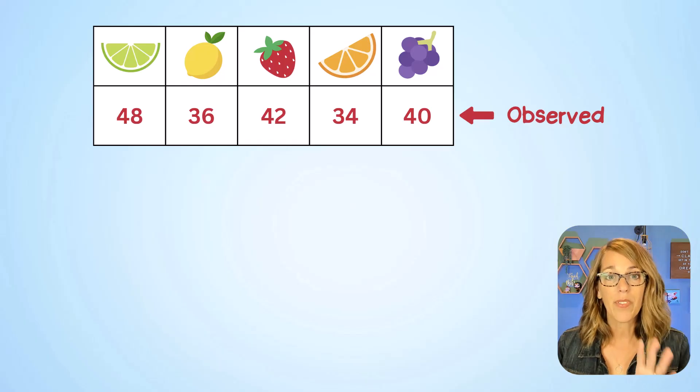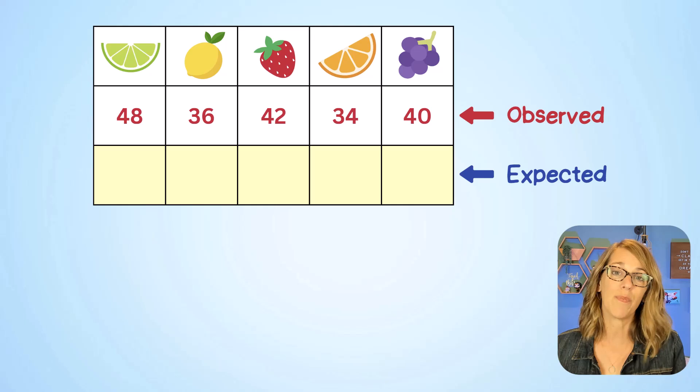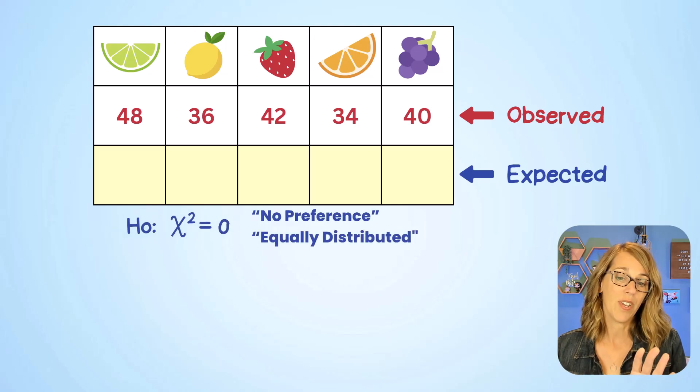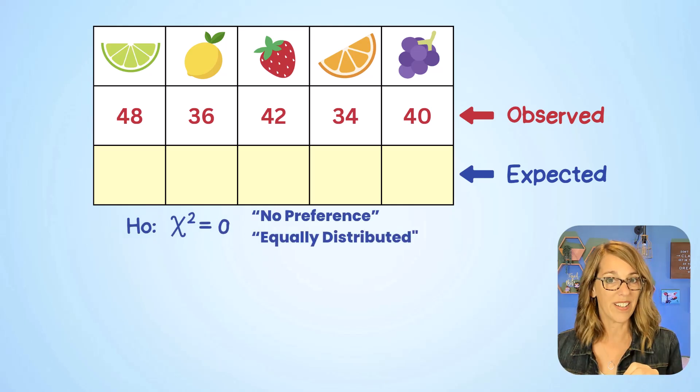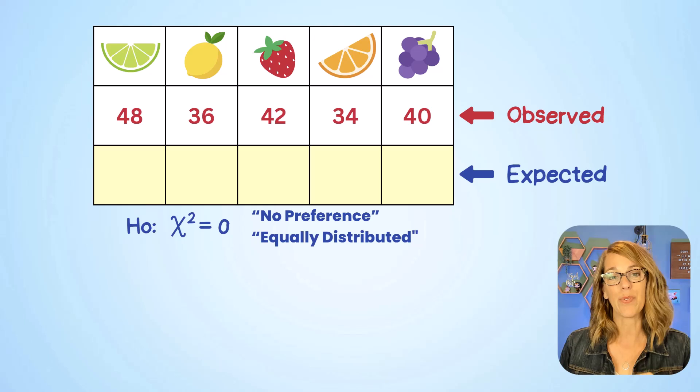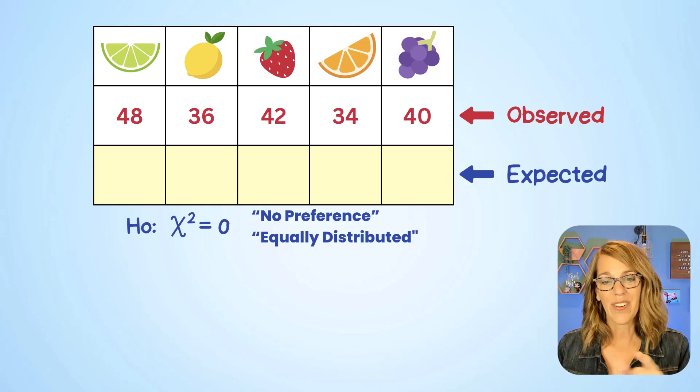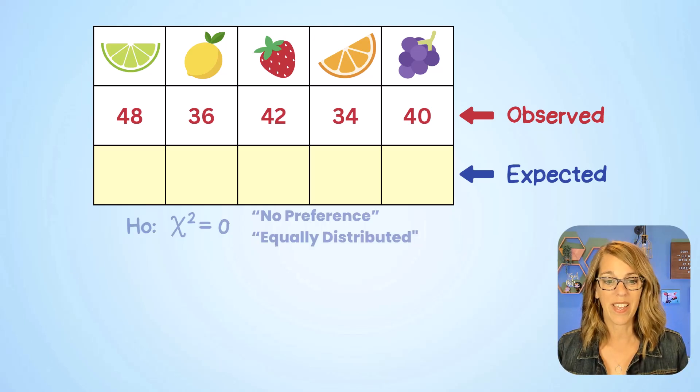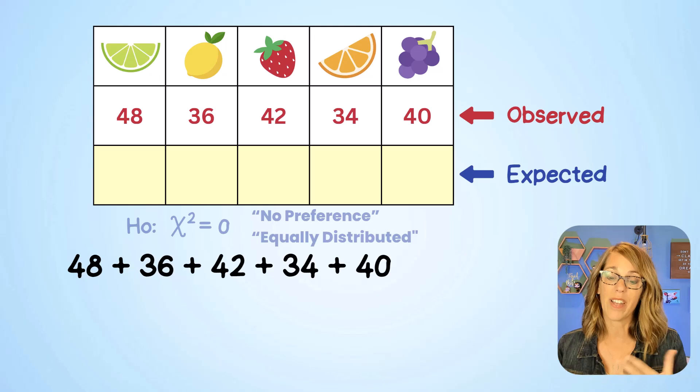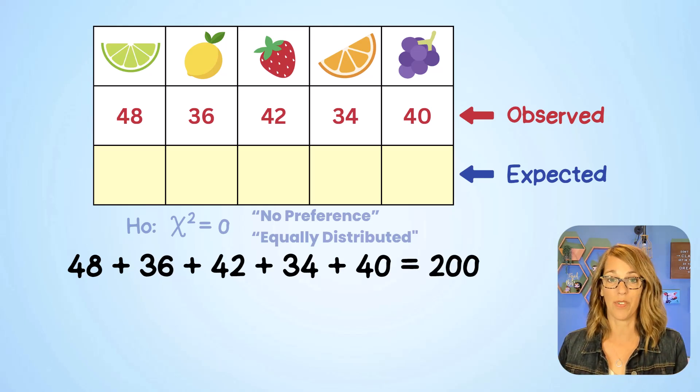So we need to come up with those expected values, and to do that we're going to assume that our null hypothesis is true, which says there is no preference, that the numbers are equally distributed. Let's go ahead and add these numbers up, and as we add the numbers up we find that we've got 200 responses total.